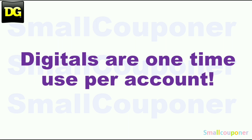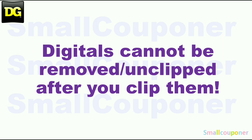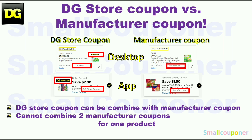Digitals are one-time use per account. Store pricing may vary from store to store. Digitals cannot be removed or un-clipped after you clip them. This is the difference between a store coupon and a manufacturer coupon. At Dollar General, you can combine a store coupon with a manufacturer coupon, but you cannot combine two manufacturer coupons, whether it be in the form of a digital, an insert paper, or a printable coupon for one product.